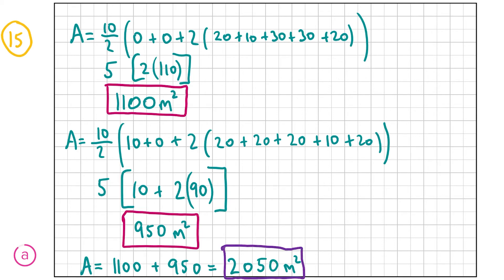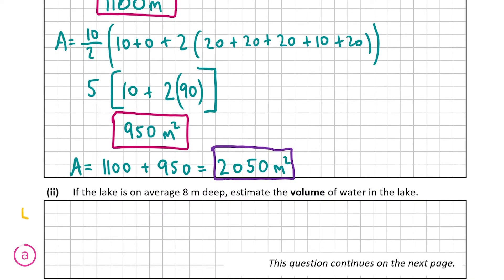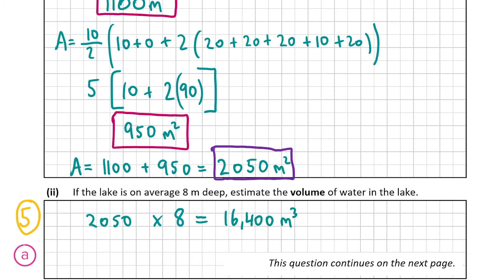Part a(ii) is worth 5 marks. The question states that the lake is on average 8 meters deep, and asks us to estimate the volume of water. We know the surface area is 2050 m², so we multiply by 8 to get 16,400 m³. That's straightforward — that's our answer for part a(ii).